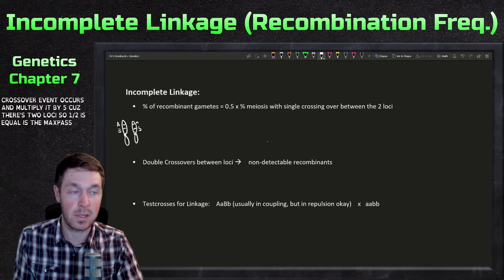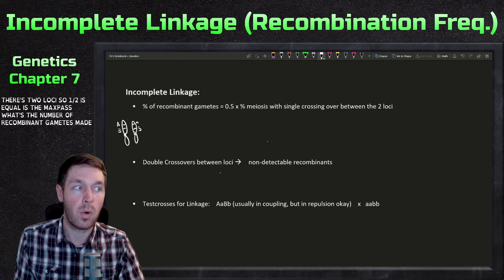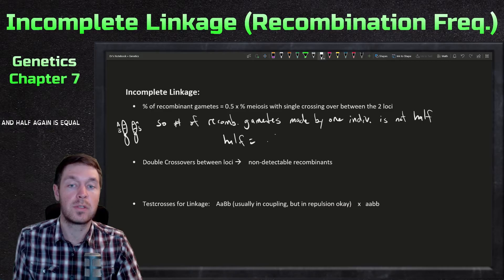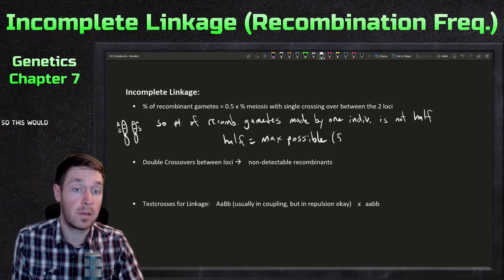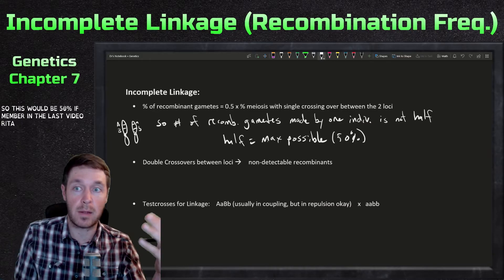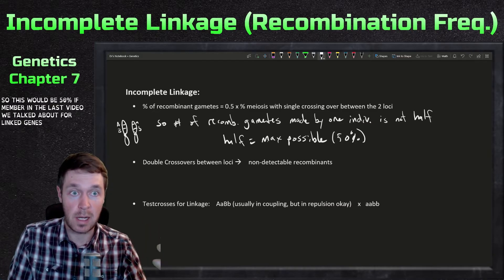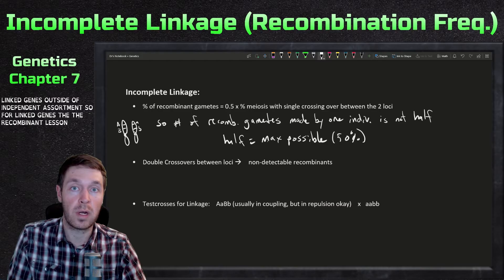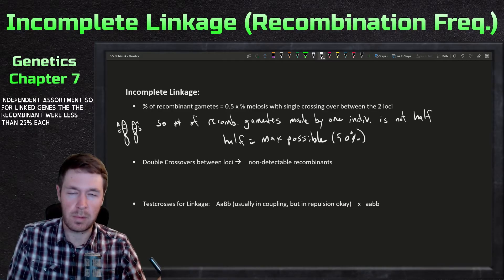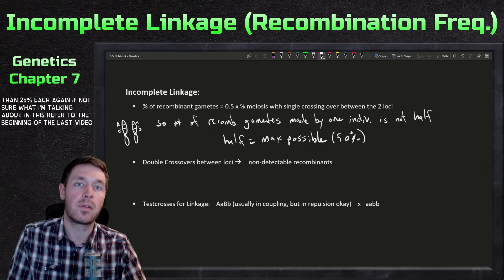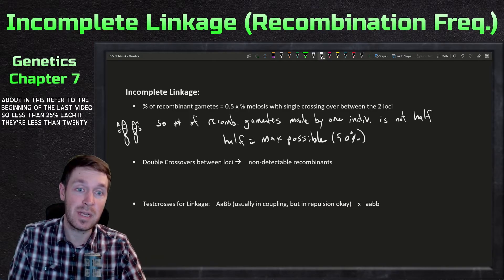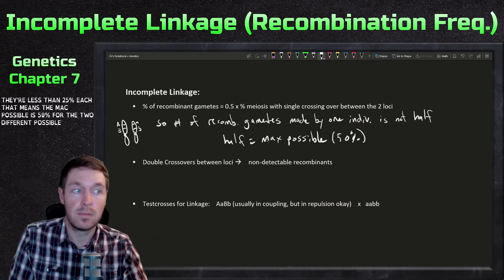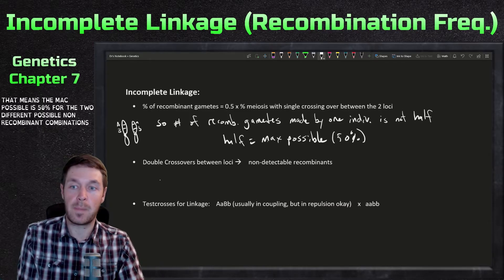The number of recombinant gametes made by one individual means 50 percent is the maximum possible. For linked genes, recombinants were less than 25 percent each — as discussed in the last video — so the max possible is 50 percent across the two different non-recombinant combinations.